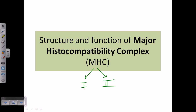Class 1 type MHC can be found in all nucleated cells inside our body. On the other hand, Class 2 type MHC protein can only be found on antigen presenting cells, or APCs. These APCs — such as macrophages, dendritic cells, and B cells — can take up bacteria or pathogens, engulf them, chew them up, hold onto the antigen, and present it to other cells for destruction.